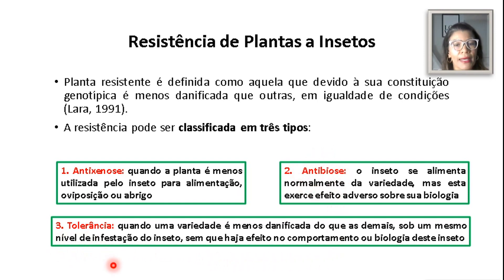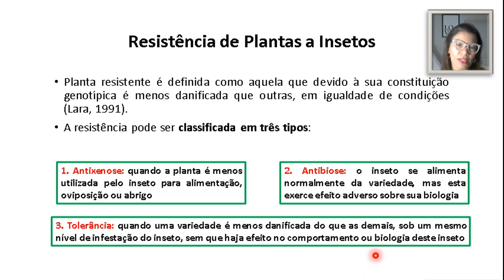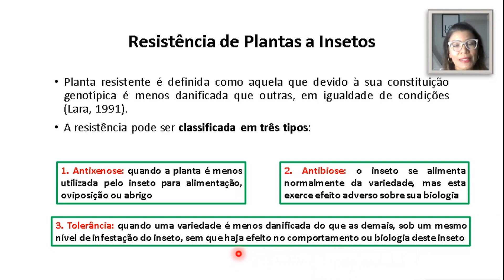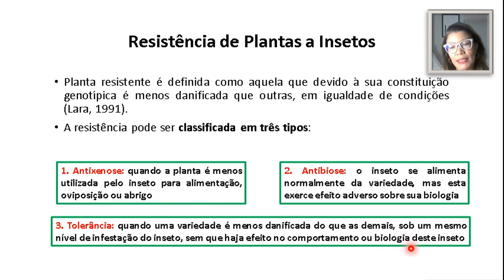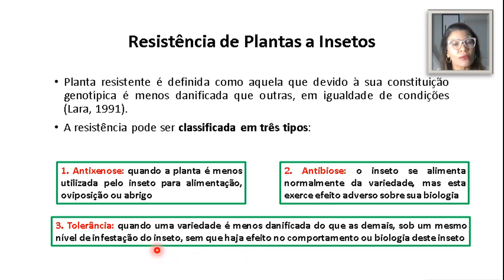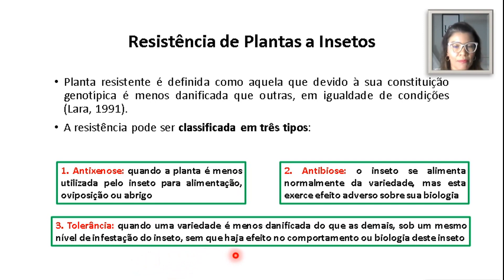O terceiro tipo é a tolerância, que é quando uma variedade é menos danificada do que as demais, sob o mesmo nível de infestação do inseto, sem que haja efeito no seu comportamento ou na sua biologia. O inseto não é afetado nem no seu comportamento — o que geraria a antixenose — nem na sua biologia ou ciclo de vida — o que geraria a antibiose. A tolerância depende exclusivamente da capacidade genética da planta de se recuperar dos danos causados por esses insetos.